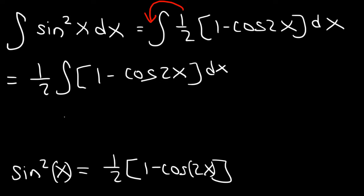So now let's go ahead and find the indefinite integral. The integral of 1 is going to be x. And what is the integral of cosine? The integral of cosine is sine, but the integral of cosine 2x is going to be sine 2x divided by the derivative of 2x, which is 2.